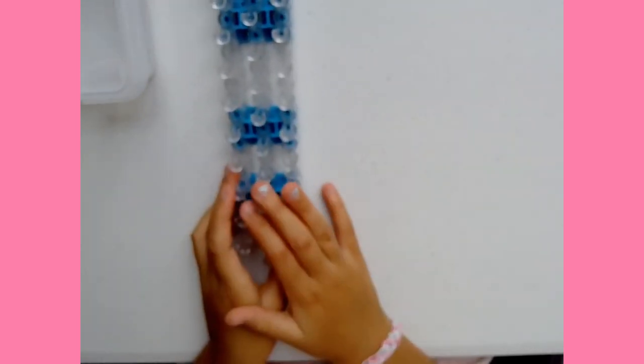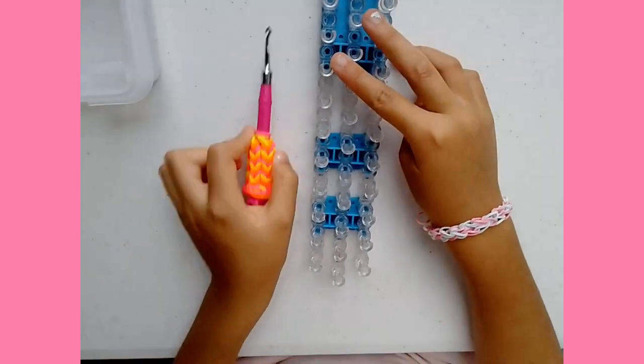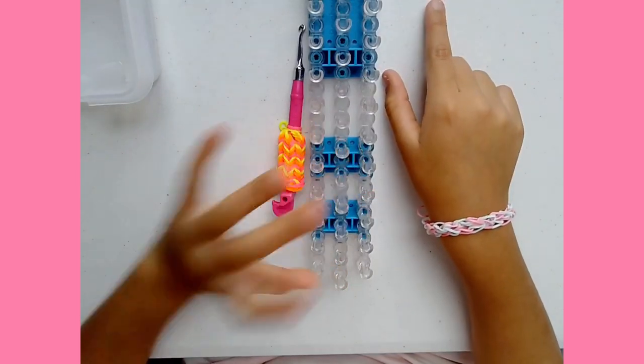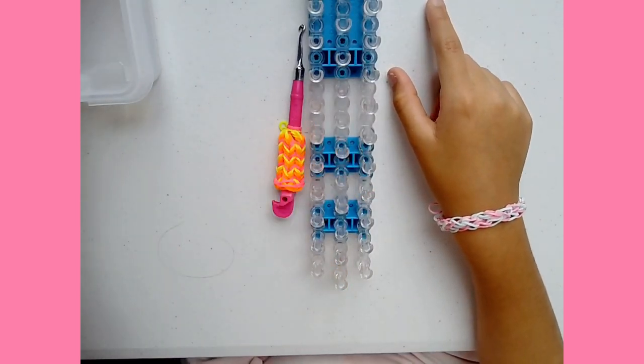So let's start. First off, you're going to need a loom of course. Instead of doing a link down in the description, I will put your original honeycomb bracelet I-card right up here in the I-card. Boom! Hook and some bands, and don't forget a C-clip.